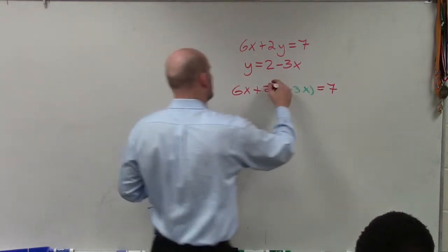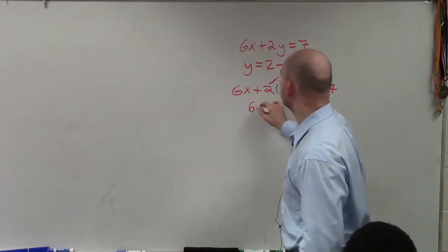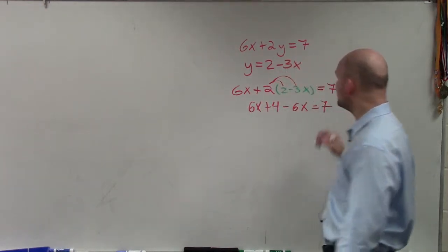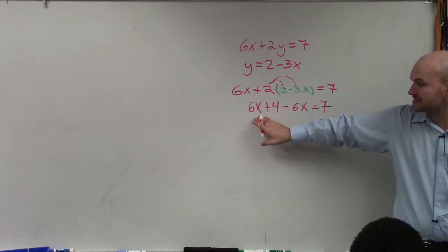Now, we just go and simplify. So I apply the distributive property. So I have 6x plus 4 minus 6x equals 7. And what you guys notice is that my x is on the same side.